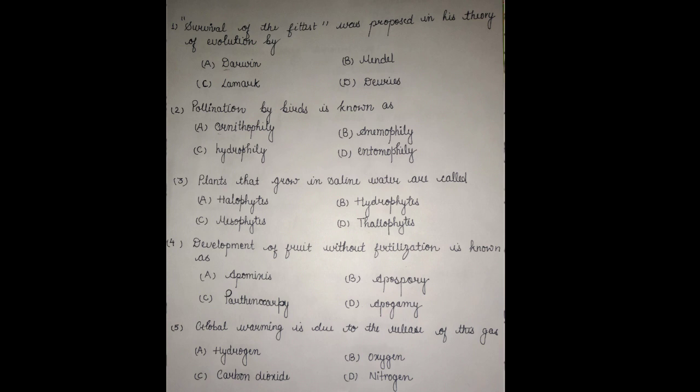Option A: Darwin, Option B: Mendel, Option C: Lamarck, and Option D: De Vries. The answer is Darwin, because only he proposed the theory of evolution.